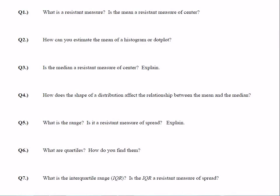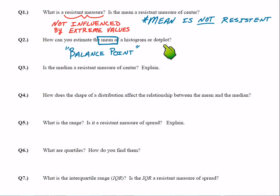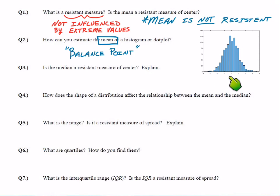Last bit for these notes. Q1: What is a resistant measure? A resistant measure is a measure that's not influenced by extreme values. The mean is actually not a resistant measure at all. Q2: How can you estimate the mean of a histogram or dot plot? The mean is a balanced point — if the histogram was made out of solid material and you had to balance it on your finger, the mean is the point where it would balance.